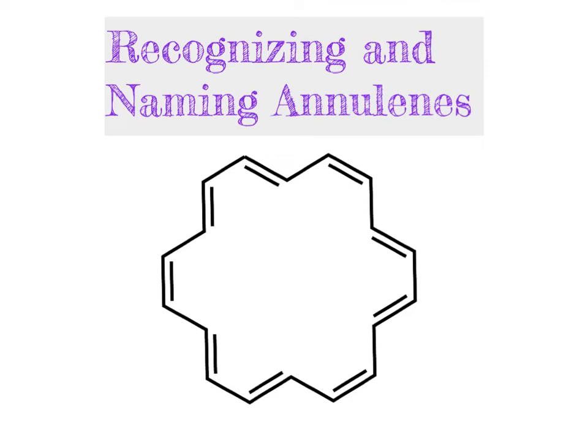In the last couple of videos, we looked at nomenclature of different types of systems that we will be describing as aromatic systems, starting with derivatives of benzene, and then continuing with what we refer to as aromatic heterocycles, where one of the atoms in a ring is not a carbon, but instead is an oxygen, nitrogen, or some other heteroatom.